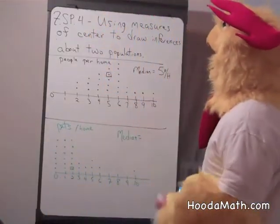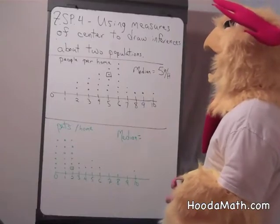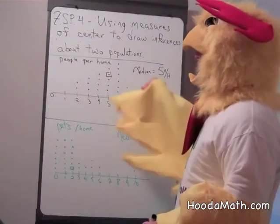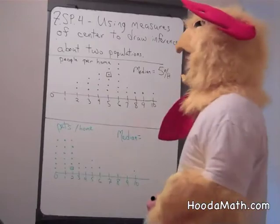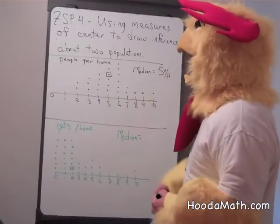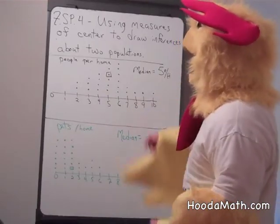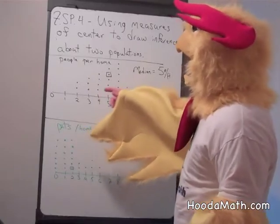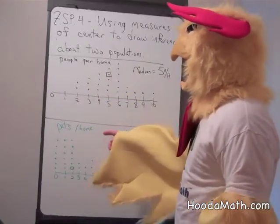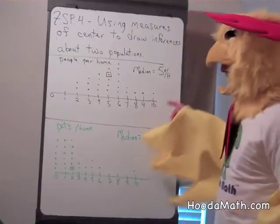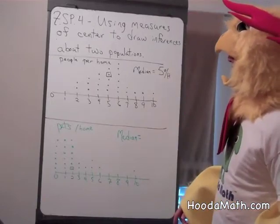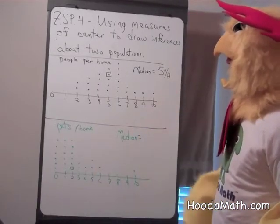Now we're going to use measures of center to draw inferences about two populations. Two polls were taken among a certain class of students. There were 25 students in a class, and they said how many people lived in each home and how many pets lived in each home. Just looking at this, you could tell that on average there's more people per home.